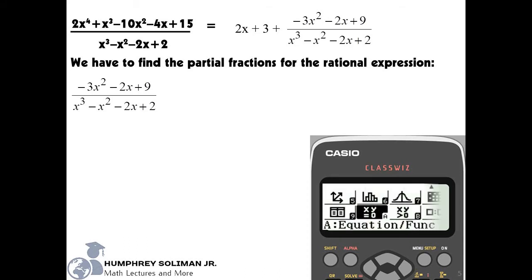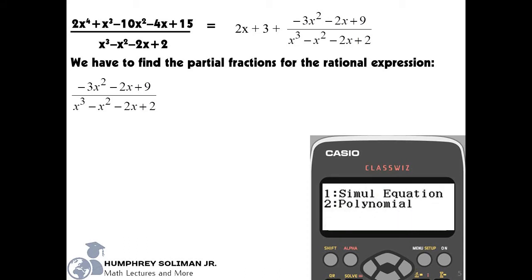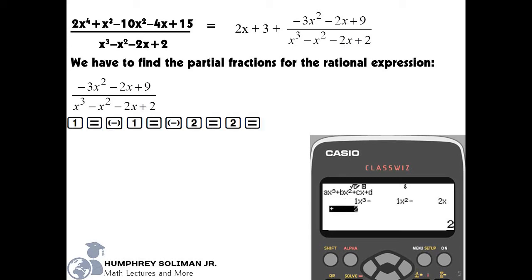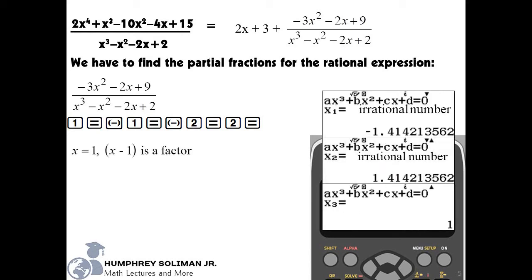We need to put the calculator in equation mode and then select option 2, polynomial. Our denominator is in the third degree, so we will select 3 for the polynomial degree. We are now ready to input the numerical coefficients and the constant of our denominator. We can follow the string of keys here. And then, if we press the equals key for 3 times, we can see the 3 values of x. Notice that the third value of x is x equals 1.